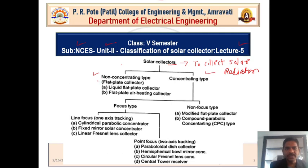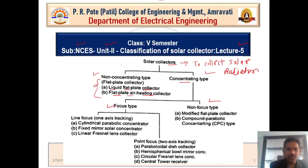In the non-concentric type there are two types: flat plate collectors — one is the liquid flat plate collector and the second is the flat plate air heating collector. The concentric type is also two types: one is the focus type and another is the non-focus type. The non-focus type has two sub-types: modified flat plate collectors and compound parabolic concentrators, CPC type.